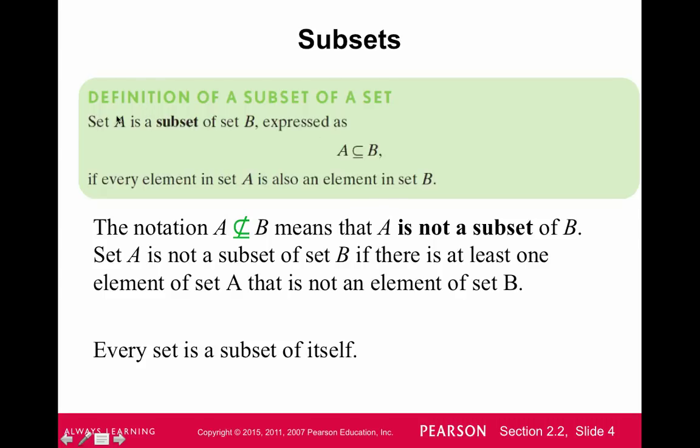So the definition of a subset: Set A is a subset of set B if every element in A is also an element in B. The notation means that A is not a subset of B. Set A is not a subset of B if there is at least one element in A that is not an element of set B.